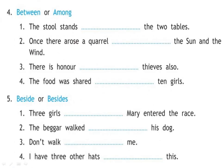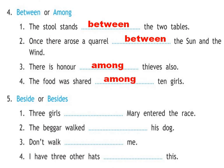Next, fill in the blanks using 'among' or 'between'. We know 'between' is used when talking about two persons, places, or things, and 'among' is used for more than two. The stool stands dashed the two tables — two is mentioned, so 'between'. There arose a quarrel dashed the sun and the wind — talking about two, so 'between' again. There's honor dashed thieves — talking about the whole thief community, more than two, so 'among'. Food was shared dashed the boys and girls — again more than two, so 'among'.